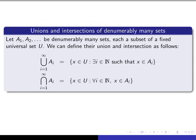The above generalizes from finitely many sets to infinitely many sets. Suppose we give ourselves denumerably many sets — that is, there's an A sub I for every I in the natural numbers. We can define their union and intersection using exactly the same technique. The union is the set of all X such that there exists an index I in the set of natural numbers such that X is an element of A sub I. The intersection is the set of all X in our universe such that for every index I in the set of natural numbers, X is an element of A sub I.